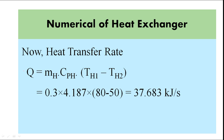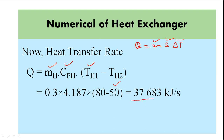Now for heat transfer rate: we consider the hot fluid because both inlet and outlet temperatures of the hot fluid are known. So Q = ṁ · Cp · ΔT. Using mass flow rate of hot fluid, specific heat of hot fluid (water), inlet temperature 80°C and outlet temperature 50°C, the heat transfer rate comes out to be 37.683 kJ/s.